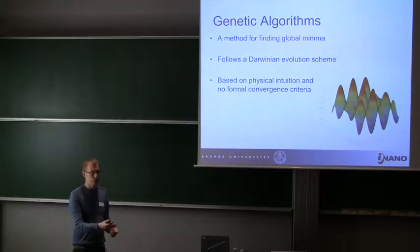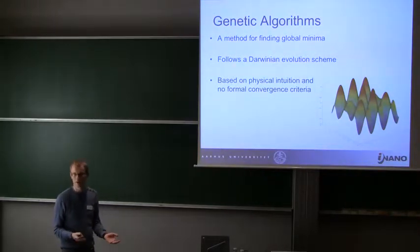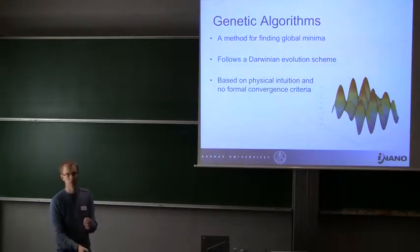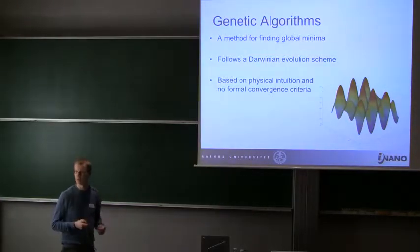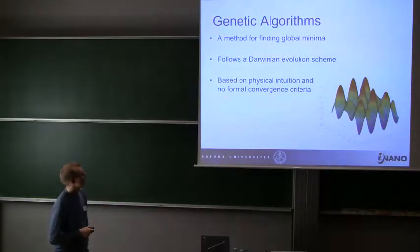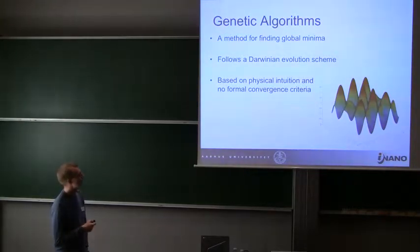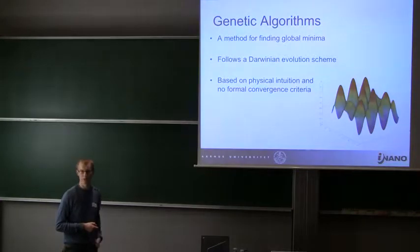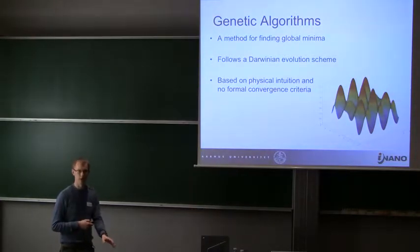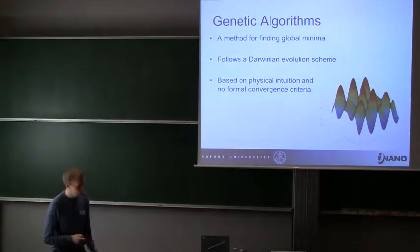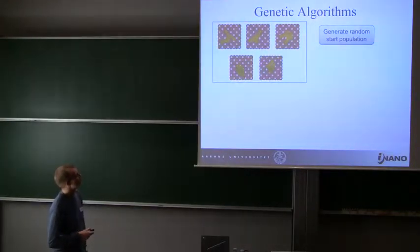We have a population of candidates. We pair them together and create new structures that are hopefully better. If they are better than anything we've seen before, we replace them in the population. We keep on going until we have a set of very good candidates, and then we say we found the global minimum. The nice thing about these methods is they're based on physical intuition, so we can put in our good ideas of how to do structure optimization. Although it does have the side effect that we don't have any formal convergence criteria.